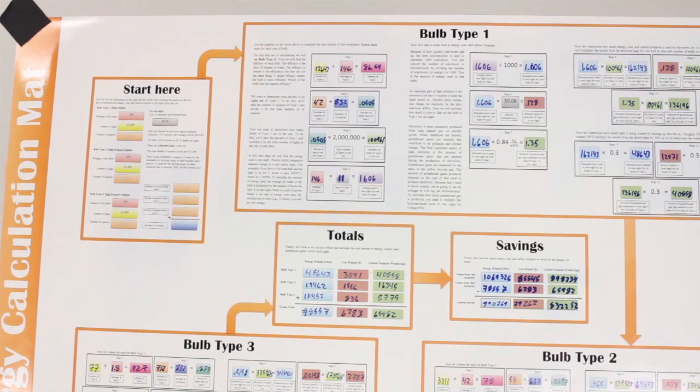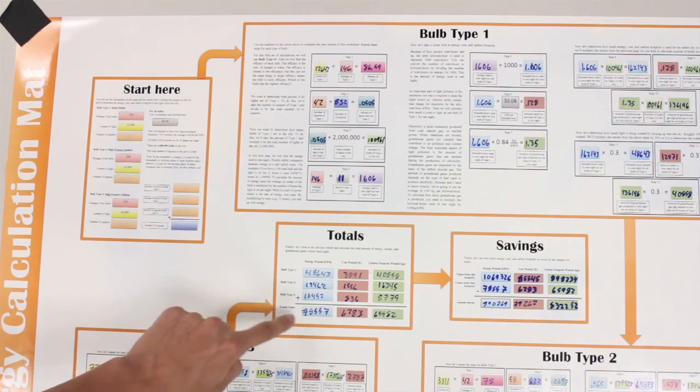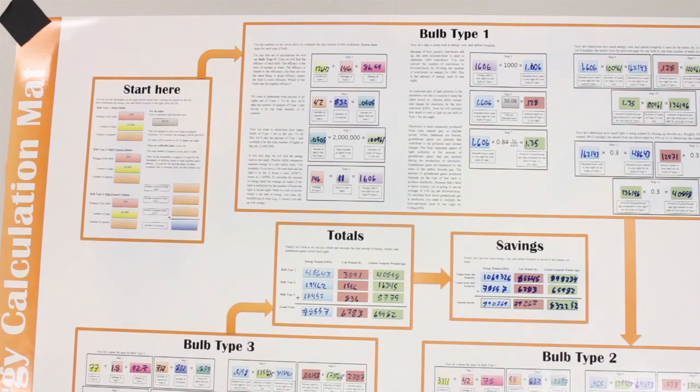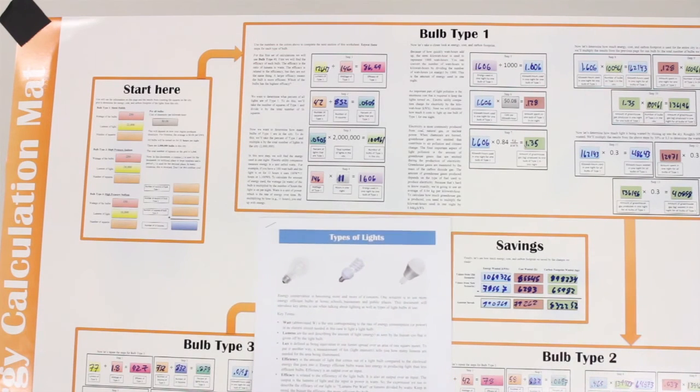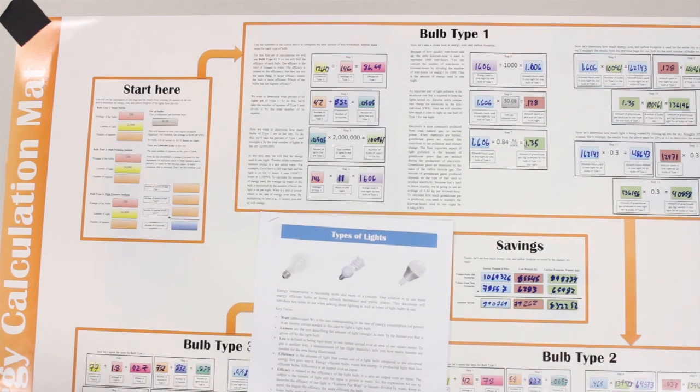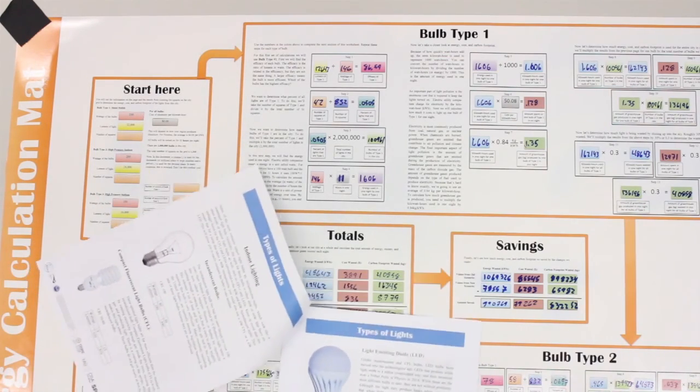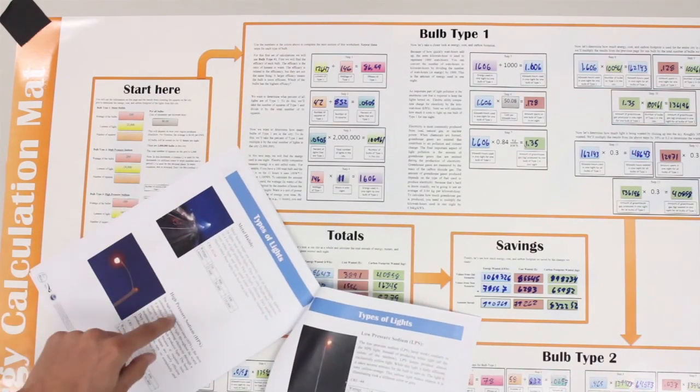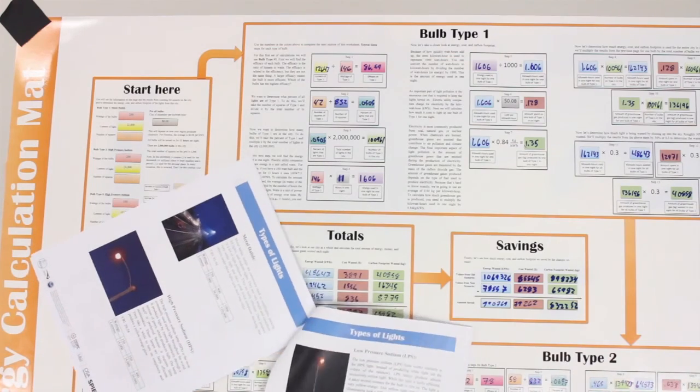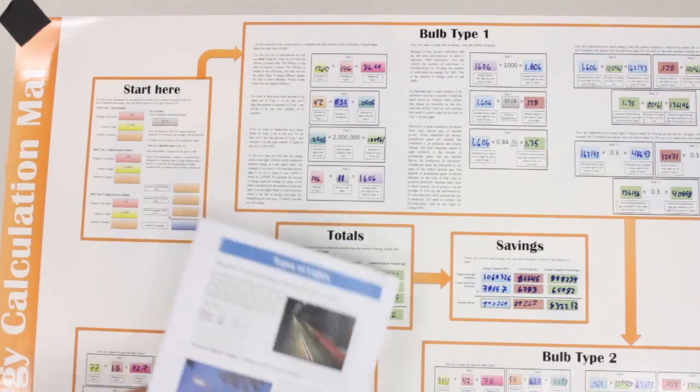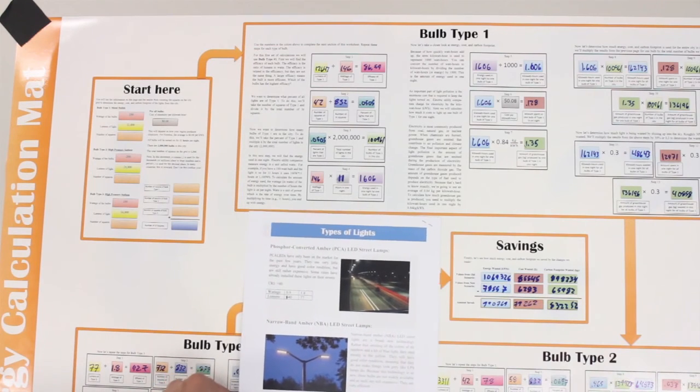In section 3 of the energy activity, the students are going to try to minimize the amount of energy wasted, cost wasted, and their carbon footprint by changing the lights. In the energy envelope, you will find a types of light handout. In this types of light handout, it has all of the bulbs from the previous section, such as the metal halides, high pressure sodium, low pressure sodium. On the back side is the lights that we recommend as being the most efficient.